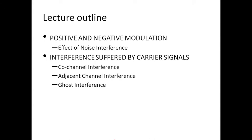In the last lecture we have seen how TV signal is modulated. The picture signal is amplitude modulated and the sound signal is frequency modulated. We also discussed the channel bandwidth of a TV signal, the DSB bandwidth and the TV channel bandwidth for VSB modulation.